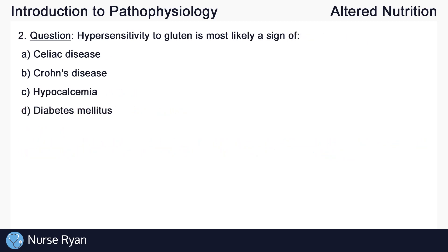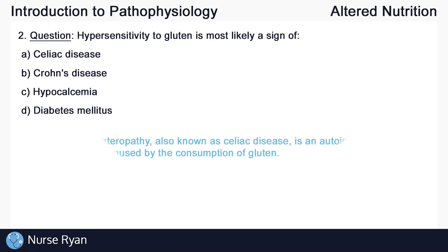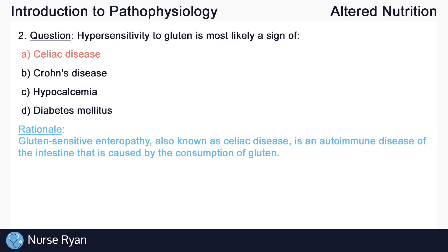Moving on to question number two: hypersensitivity to gluten is most likely a sign of? The answer here is A, celiac disease. Gluten-sensitive enteropathy, also known as celiac disease, is an autoimmune disease of the intestine that is caused by the consumption of gluten.